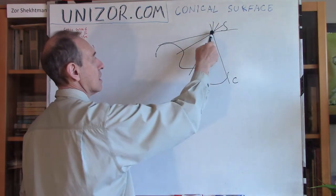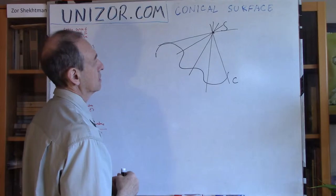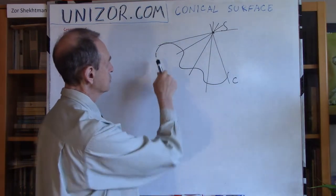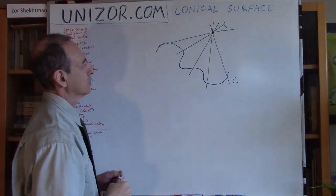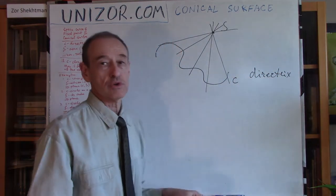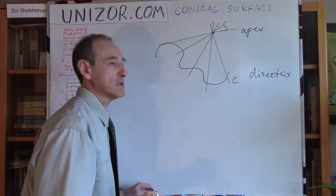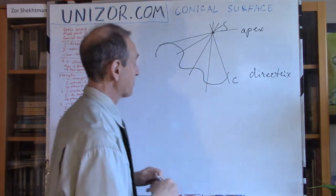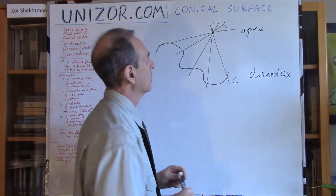The conical surface is infinite in both directions from point S, because these are straight lines and they are infinite in both directions. Now, this curve which is used to connect its points to the fixed point S is called the directrix — very much similar to the cylindrical surface, if you remember. This fixed point S is the new element here; it's called the apex. Sometimes it's called the vertex, but vertex is a more general name. I would prefer to call it the apex. So those are just two different words — terminology about the conical surface.